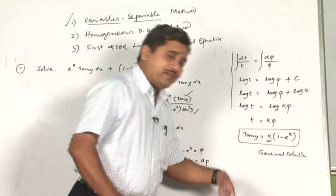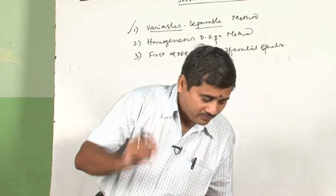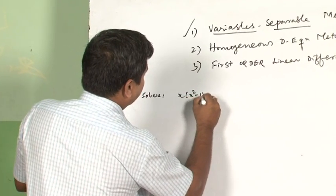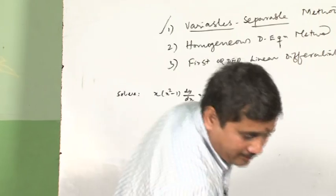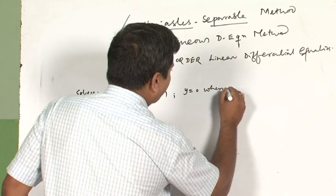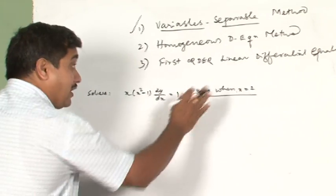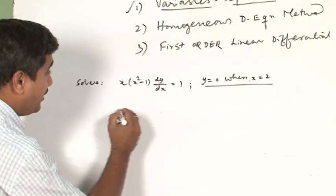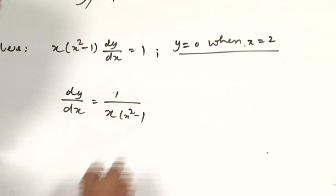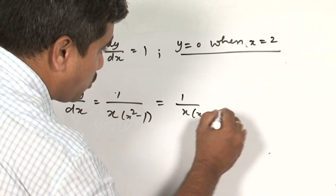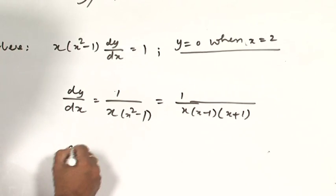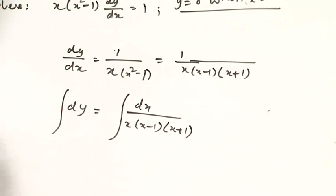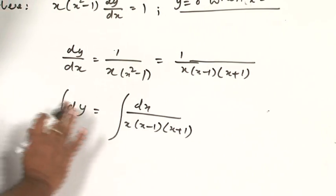Now another problem from the same topic, this time with an initial value condition. Solve: x(x² − 1) dy/dx = 1, given y = 0 when x = 2. Since conditions are given, you will get both a general solution and a particular solution. Put the differential equation into standard form: dy = dx / [x(x−1)(x+1)] by integration.